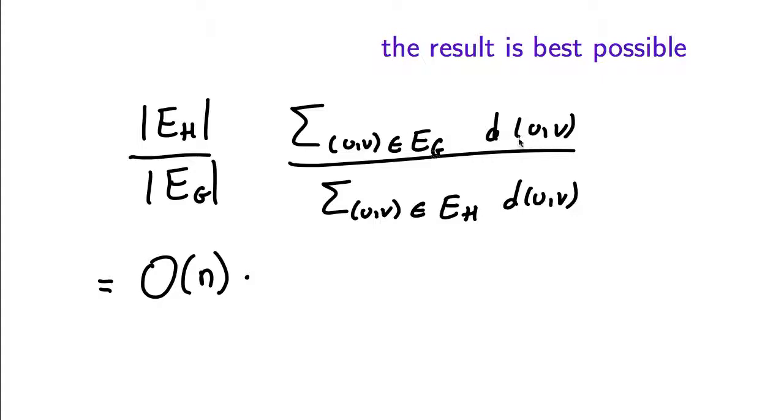Now notice that every edge has distance from U to V in the shortest path metric according to G is 1 if UV is an edge. So here the numerator is order of n, it's 1 times the number of edges of G.